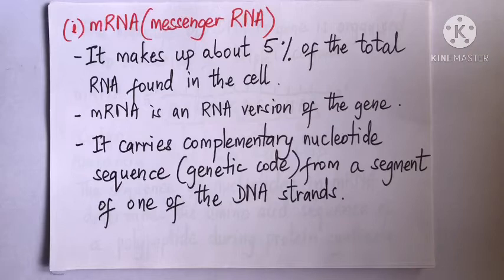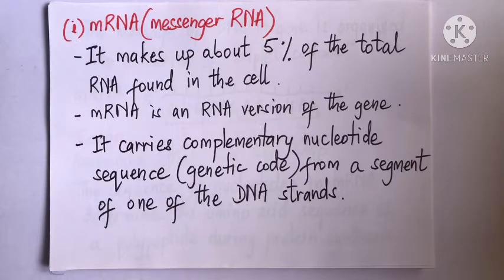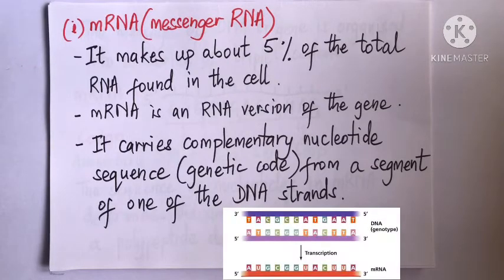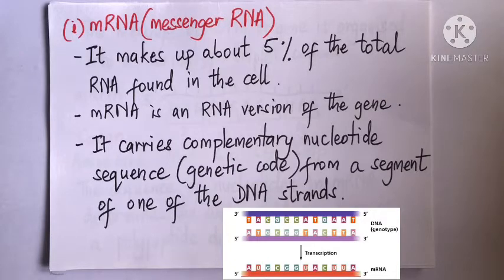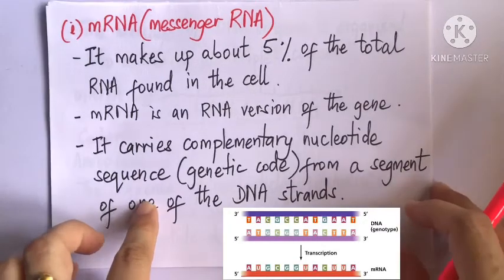The first is mRNA, which stands for messenger RNA. It constitutes about 5% of the total RNA in the cell. Most importantly, mRNA is an RNA version of the gene. This is due to the fact that mRNA carries a complementary nucleotide sequence from a segment of one of the DNA strands, and the sequence of nucleotides in mRNA is the genetic code for protein synthesis.